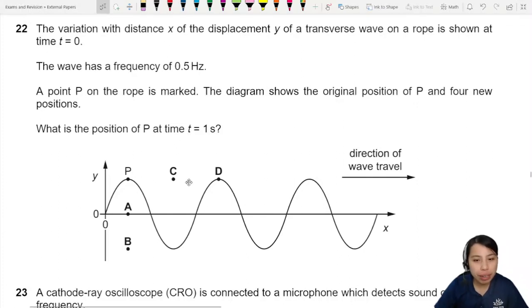In this question we have a graph here and they tell us that the variation with distance of the displacement y of a transverse wave is shown at time t0. So this graph is displacement against... what is x? Distance.